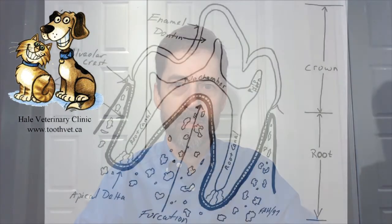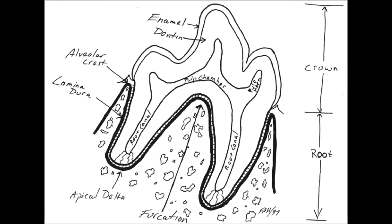We'll start with a review of the basic anatomy of a normal healthy intact tooth. Here's a diagram of the lower first molar of a dog. The crown of the tooth is covered by a thin layer of enamel, the root is covered by a thin layer of cementum, and the hard tissue making up the bulk of the tooth is dentin. Inside all of that is the hollow space containing blood vessels, nerves, and other soft tissue — the dental pulp.